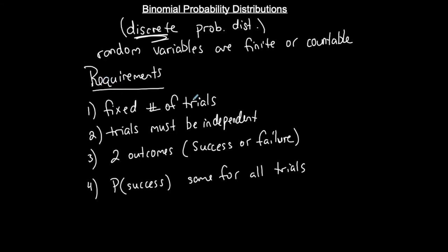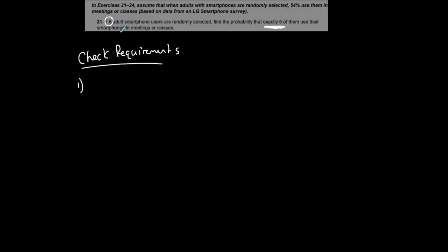Do I have a fixed number of trials? Yes — I have eight total smartphone users. So n equals 8. n represents the total number of trials; there are eight adult smartphone users, so that fixed number is 8.